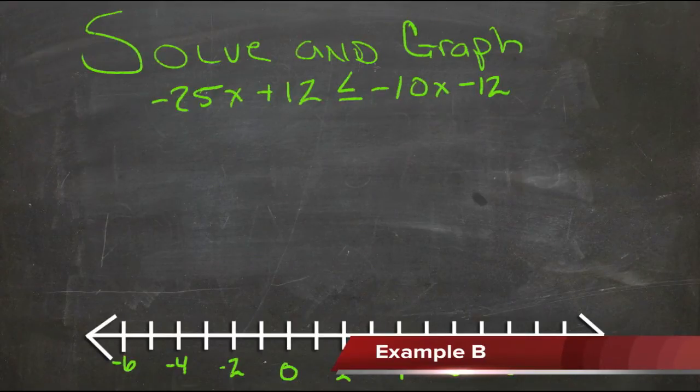We'll want to collect the variables on the side that starts with the most. This side over here has negative 10, and this one is negative 25, so since this one is less negative, we'll collect them on this side.